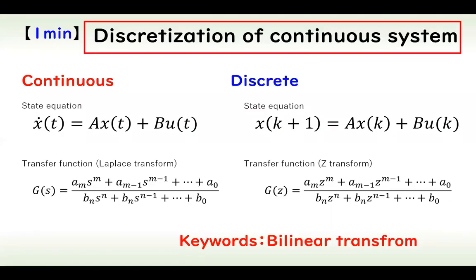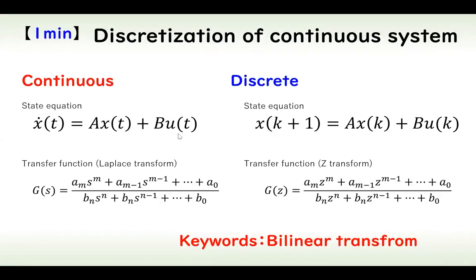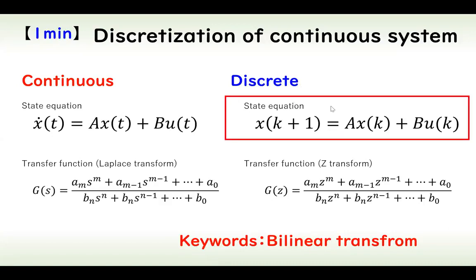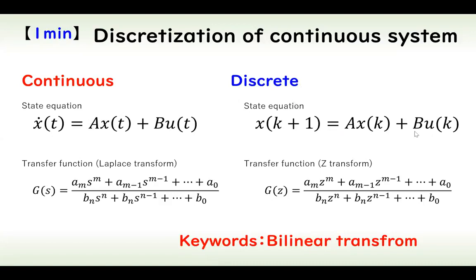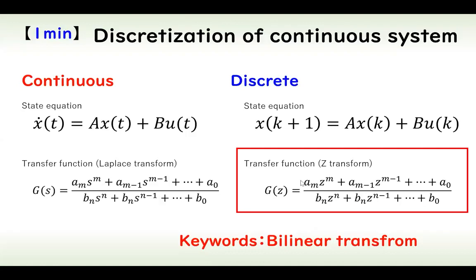In the continuous time system, the state equation is given in a standard form. In the case of a discrete time system, the state equation and transfer function are given in their corresponding discrete forms.